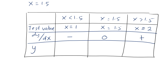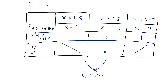When dy over dx is a negative number, the value of y is decreasing. When dy over dx is 0, the value of y is constant. When dy over dx is a positive number, the value of y is increasing. So we have a minimum point, and (1.5, 12) is a minimum point.